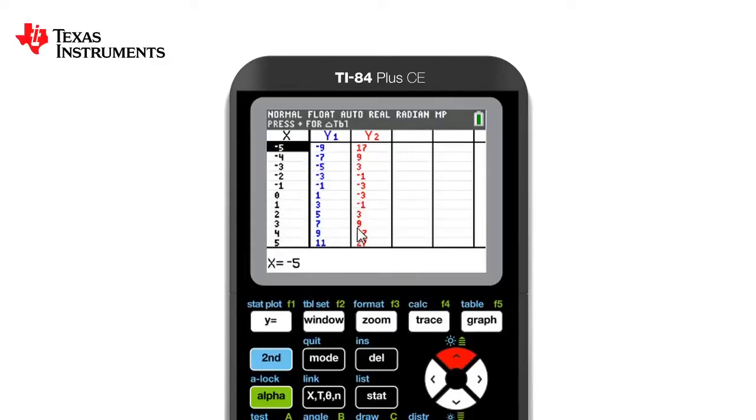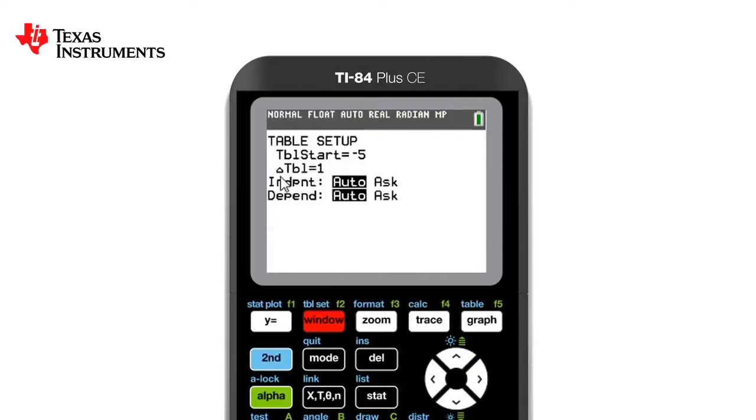If we want to change what the axis goes up by, we can press table set, which is second window. That allows us to change the increments.